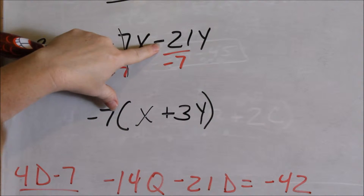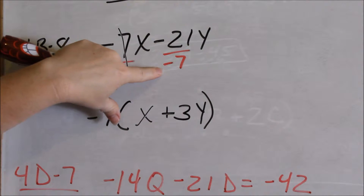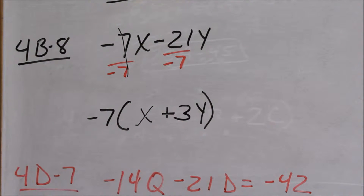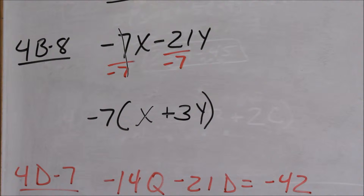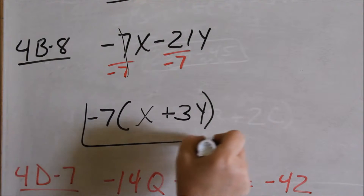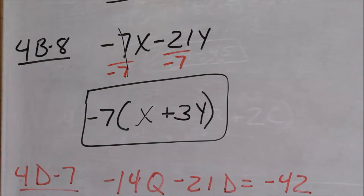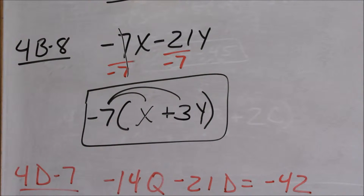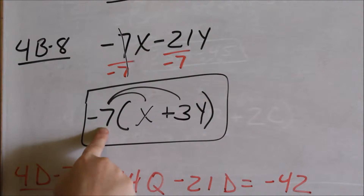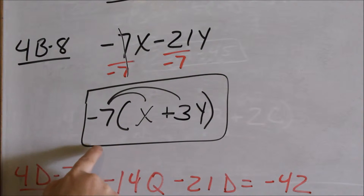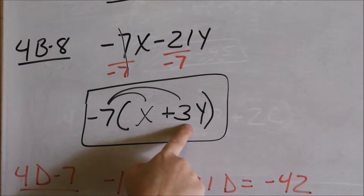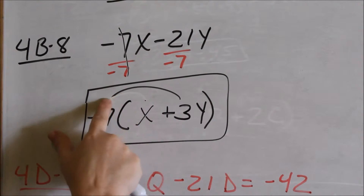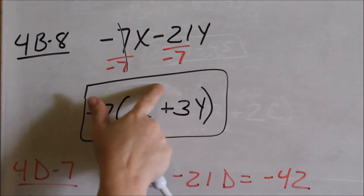When I divide negative 21y by negative 7, I have a positive 3y left. You can check yourself — this is the final answer — by going back and distributing. When you distribute, you should get what you originally started with: negative 7 times x is negative 7x, and negative 7 times positive 3y is negative 21y. So I factored correctly.